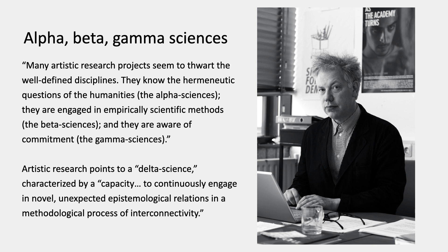It's interesting to think about sciences in this way as alpha, beta, and gamma. It is also interesting to think of artistic research and artists in general as being engaged with the humanities, the sciences, and the social sciences. Slagger argues that artistic research points to a delta science — a fourth kind of science — characterized by a 'capacity to continuously engage in novel, unexpected epistemological relations in a methodological process of interconnectivity.' The notion is that if you can situate your work in an art school, you can find spaces of freedom where you can explore the possibility of this fourth science.